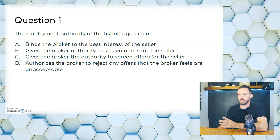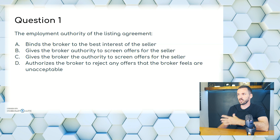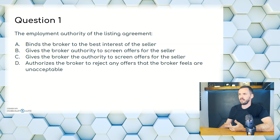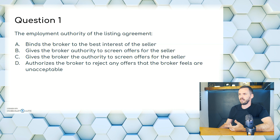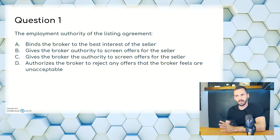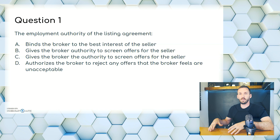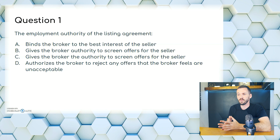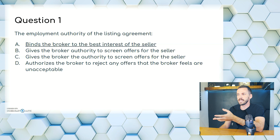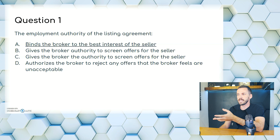Question 1. The employment authority of the listing agreement: A, binds the broker to the best interest of the seller; B, gives the broker authority to screen offers for the seller; C, gives the broker the authority to screen offers for the seller; or D, authorizes the broker to reject any offers the broker feels are unacceptable. Employment authority just means brokers have obligations as an employee of the client — we can't make decisions for them. So brokers are not allowed to do B through D. The answer is A: we work in the best interest of the seller.